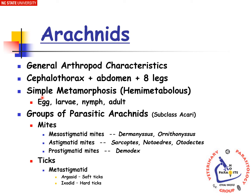They exhibit a simple type of metamorphosis, which is also known as a hemi-metabolous type of life cycle, composed of the egg, the larvae, the nymph, and the adult.